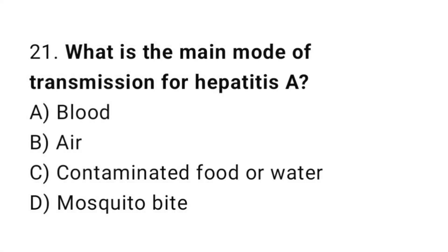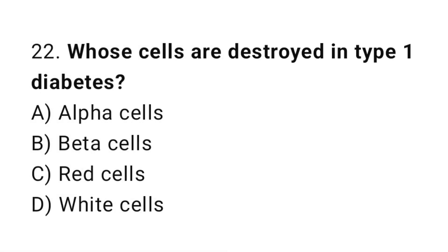Question number twenty-one: what is the main mode of transmission of hepatitis A? The correct answer is C, contaminated food or water. Question number twenty-two: whose cells are destroyed in type one diabetes? The correct answer is B, beta cells.